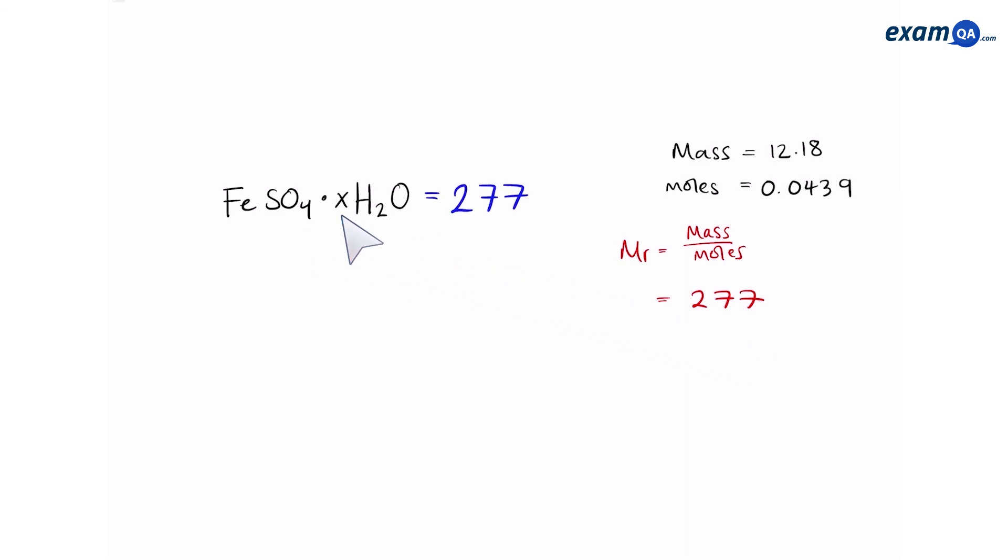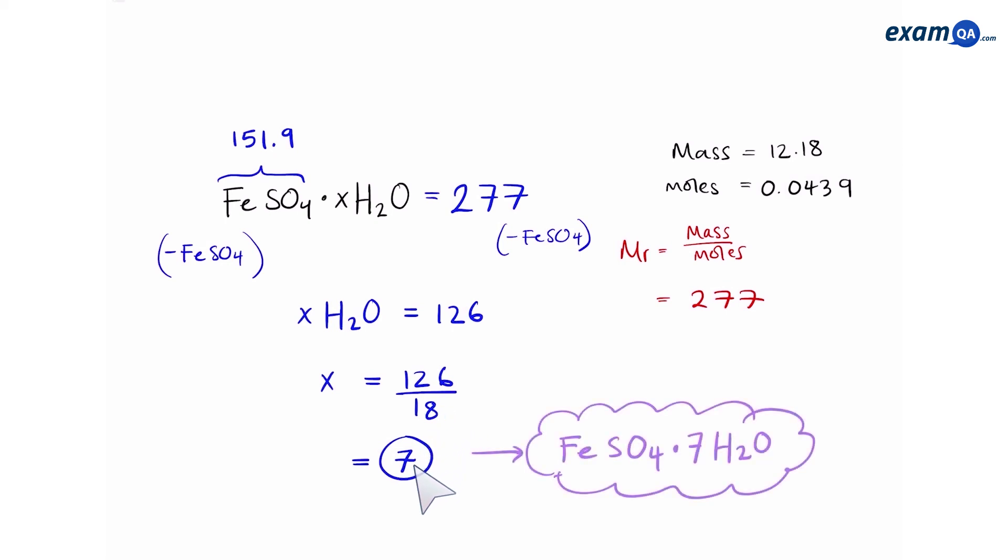Then let's try to work out x. So first we'll start by subtracting FeSO4 iron sulfate from both sides. That leaves us with x times water, divide by 18 to get rid of the water and that leaves us with 7. And this is the final formula of the hydrated iron sulfate.